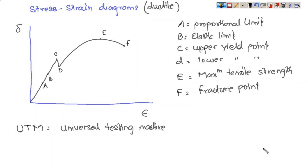The material keeps elongating until it reaches point E, which denotes the maximum tensile strength — the maximum stress the body can withstand without failure. Beyond E, between E and F, there is neck formation, where the cross-section reduces, and ultimately at point F the body breaks into two parts — complete fracture. The distance between E and F also depends on ductility; greater ductility means a greater E-to-F distance.